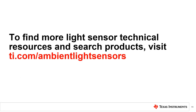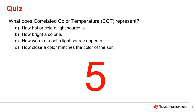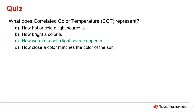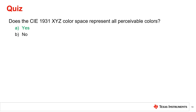For more light sensor technical resources and to search TI products, please visit the link shown. Thanks for taking the time to watch this video. Please try the following quiz. What does Correlated Color Temperature, or CCT, represent? CCT represents how warm or cool a light source appears. Does the CIE 1931 XYZ color space represent all perceivable colors? Yes, the CIE 1931 XYZ color space was created so that all colors can be described.